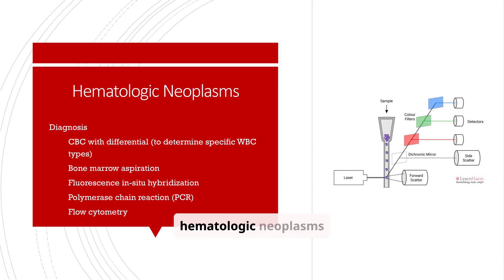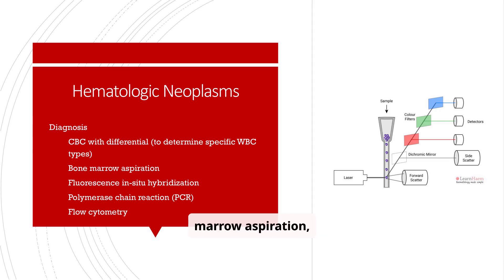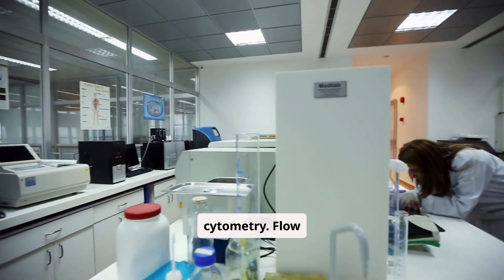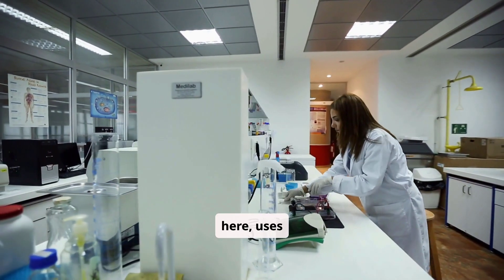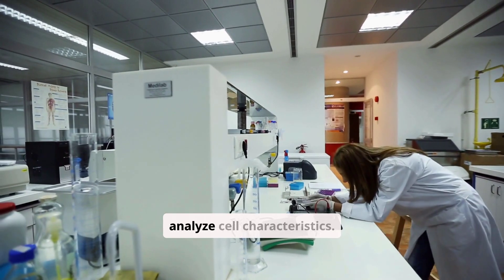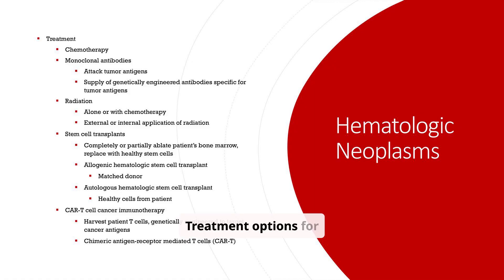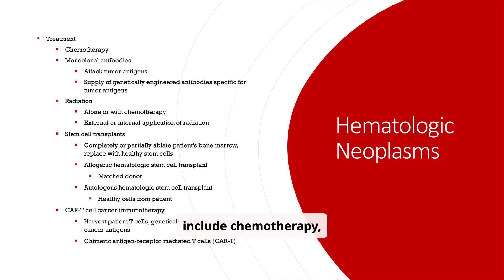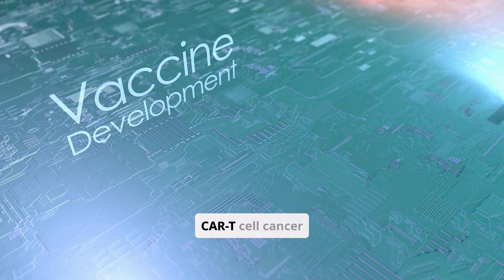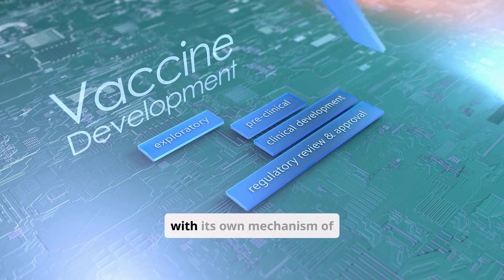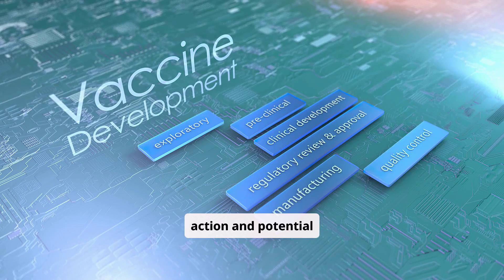Diagnosing hematologic neoplasms requires a combination of methods, including a CBC with differential, bone marrow aspiration, FISH, PCR, and flow cytometry. Flow cytometry, as illustrated here, uses lasers and detectors to analyze cell characteristics. Treatment options include chemotherapy, monoclonal antibodies, radiation, stem cell transplants, and CAR-T cell cancer immunotherapy, each with its own mechanism of action and potential benefits.